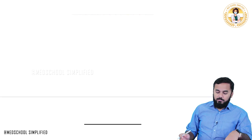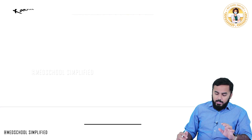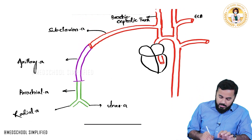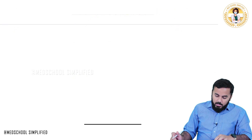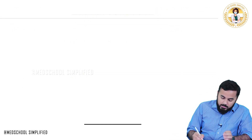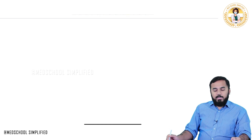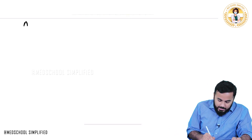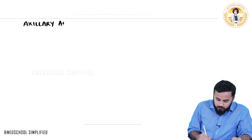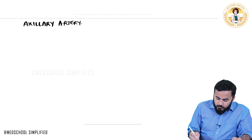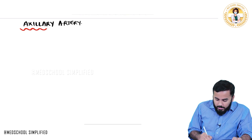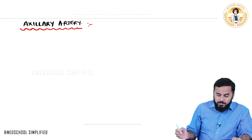Before discussing each and every branch, the first branch I want to start with is the axillary artery, and then I will discuss the subclavian artery. So let us start discussing the axillary artery and its branches.